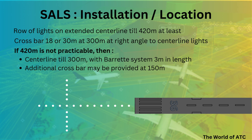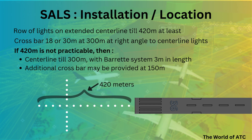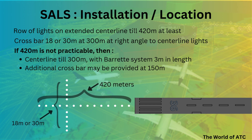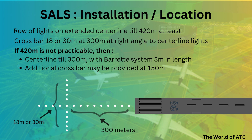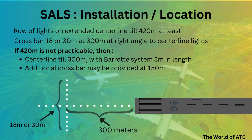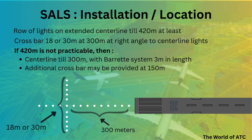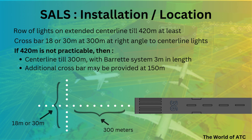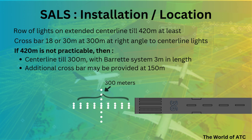The Simple Approach Lighting System consists of a row of lights on the extended center line up to at least 420 meters, and a crossbar of either 18 meters or 30 meters at 300 meters of the center line, provided at right angles to the center line lights. If 420 meters of center line length is not practicable, the center line would be provided up to 300 meters.